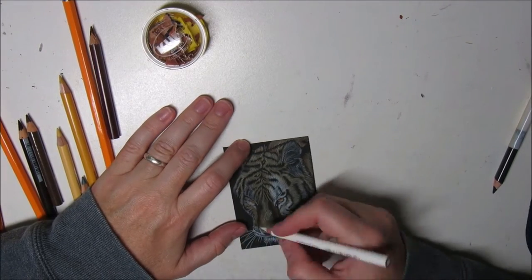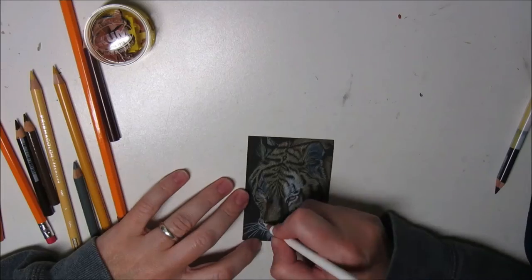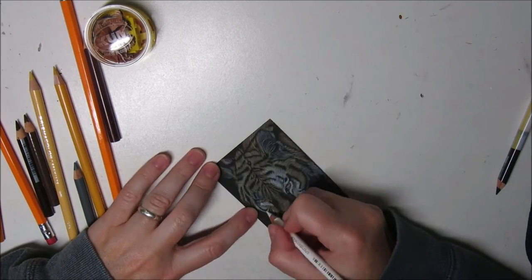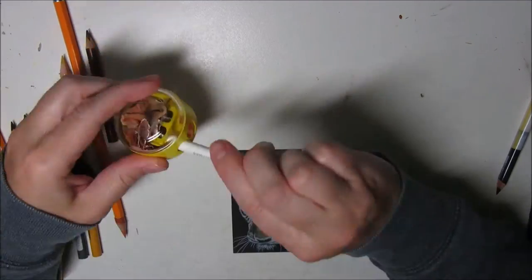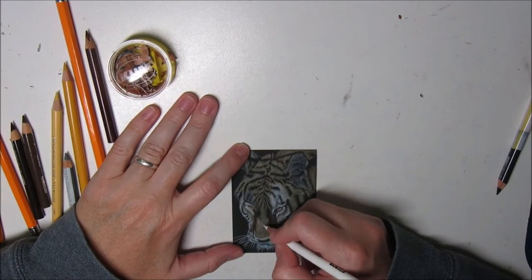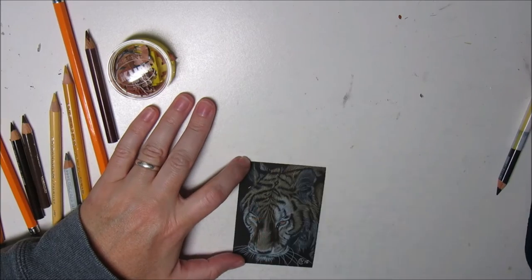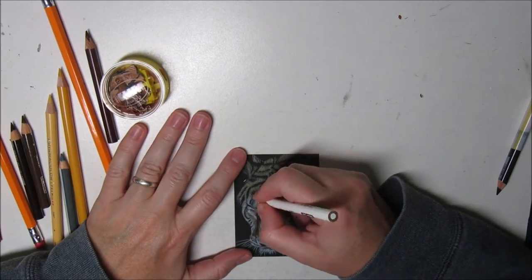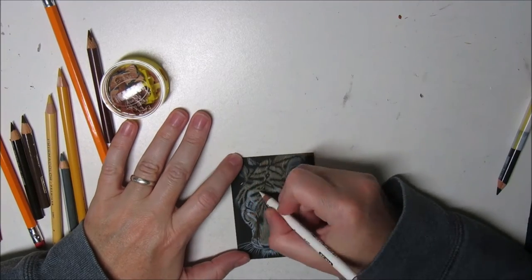Then I took my white again and I pushed a little harder on it this time to establish my lighter areas—actually white areas on the fur.